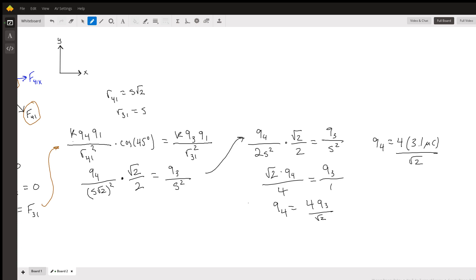The distance between four and one will be s*√2. Geometry tells us that the diagonal of the square is √2 times the side length. We'll plug those in, and we can notice that we have k on both sides, so that will cancel, and we have q1 on both sides, so that'll also cancel.